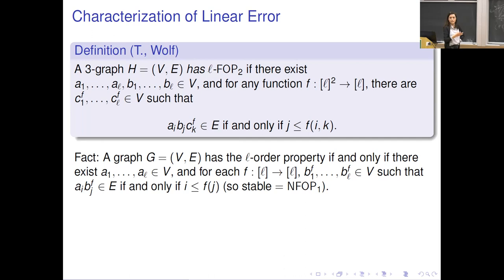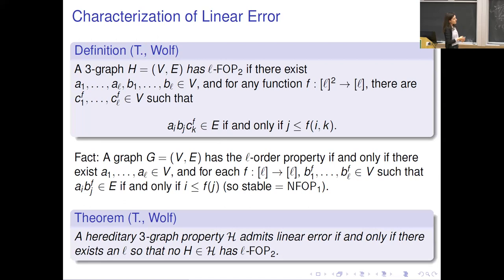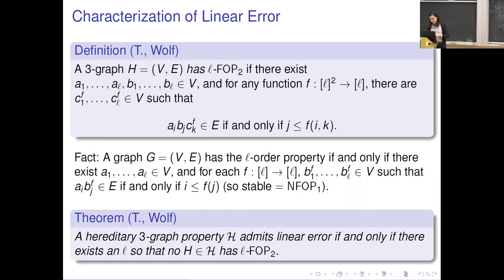Our main theorem in the hypergraph setting: a hereditary three-graph property admits linear error if and only if there exists an L such that no H in the property has the L-FOP. So having the L-FOP is like being unstable, and this theorem says you admit linear error if and only if you're stable in the no-FOP sense.